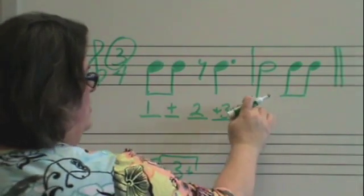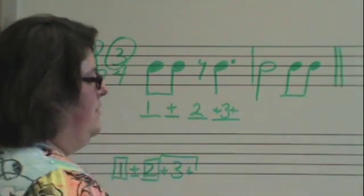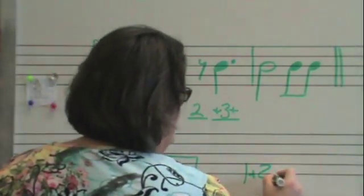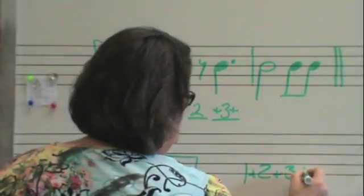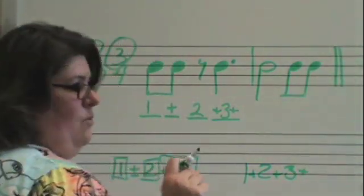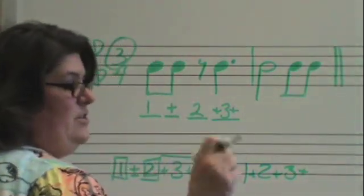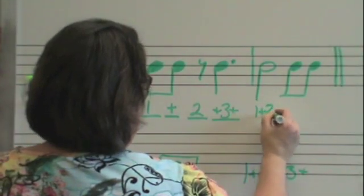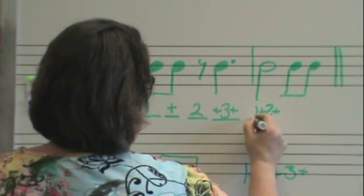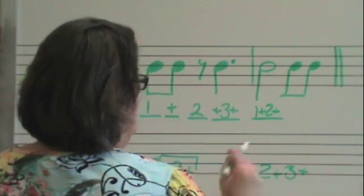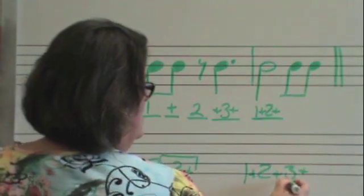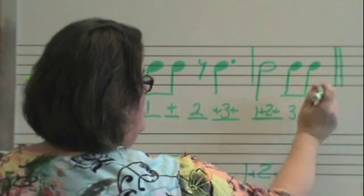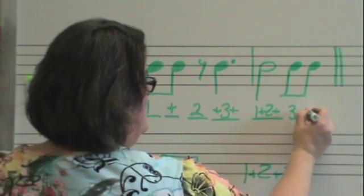Half notes are equal to two complete counts — that's one and, two and. Eighth note gets one piece. Eighth note gets one piece.